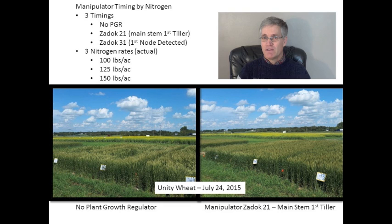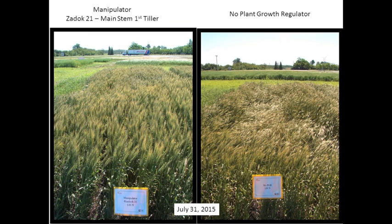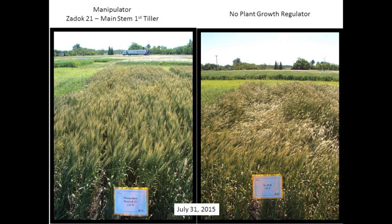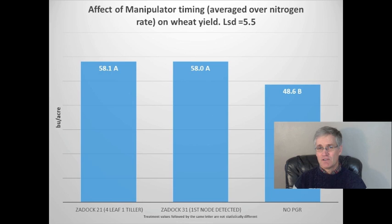You can also see from the picture on the right that the application of Manipulator is really helping the crop to keep standing. Even at 150 pounds per acre of nitrogen, the early application of Manipulator at herbicide timing is doing a nice job of keeping the crop standing compared to where no plant growth regulator was applied. There really wasn't any further improvement in lodging resistance by spraying at the Zadok 3-1 stage in our trial. The improvement in lodging resistance also translated into a significant yield improvement of 10 bushels, whether the Manipulator was applied early or late.